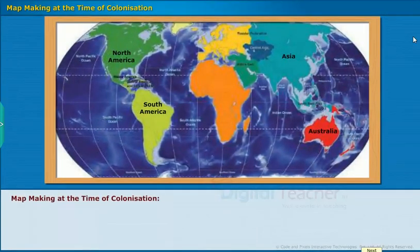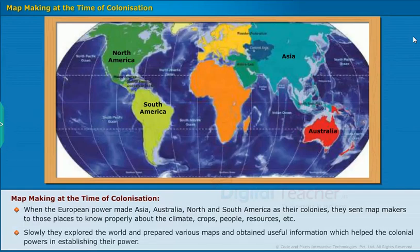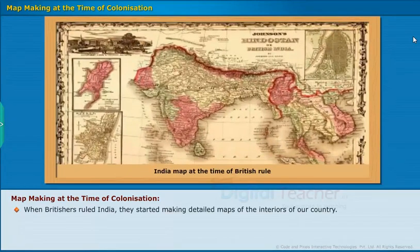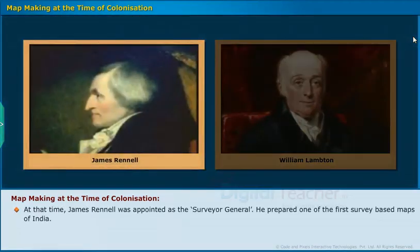Map Making at the Time of Colonization. When European powers made Asia, Australia, and North and South America their colonies, they sent map makers to those places to learn about the climate, crops, people, and resources. They explored the world and prepared various maps to help colonial powers establish their authority. When the British ruled India, they started making detailed maps of the interiors of the country. They established a department called Survey of India. James Rennell was appointed as the Surveyor General and prepared one of the first survey-based maps of India.